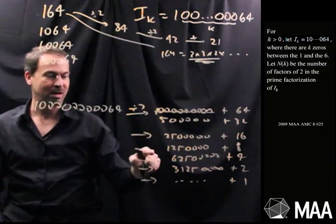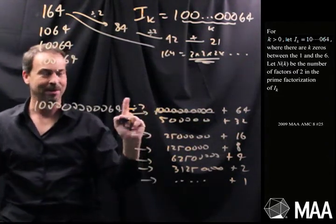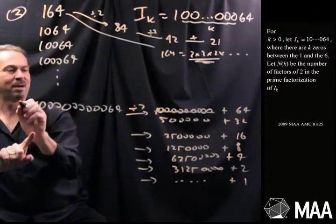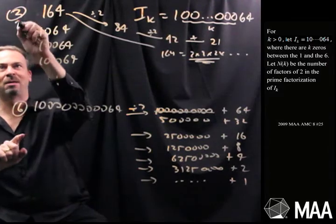So I can divide by 2: 1, 2, 3, 4, 5, 6 times. All right. All right. So here I can divide by 2 three times. Here I can divide by 2 six times. So the extremes I've got.